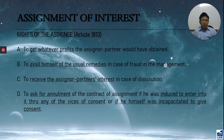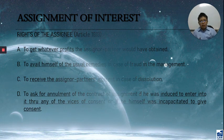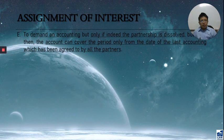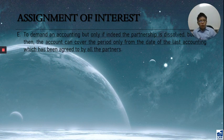Remember, this is an avoidable contract — that is why annulment is available as a remedy to the assignee whose only reason for entering into the contract is because of the vices of consent or incapacity. Also, letter E: the assignee has a right to demand an accounting when the partnership is already dissolved. But remember, the accounting period should cover only from the last accounting which has been agreed upon by all the partners.